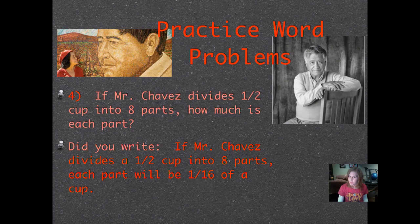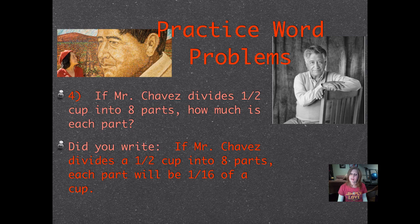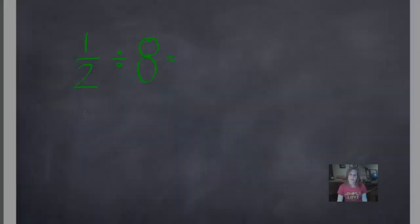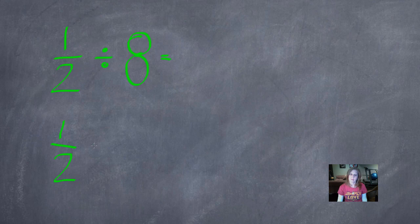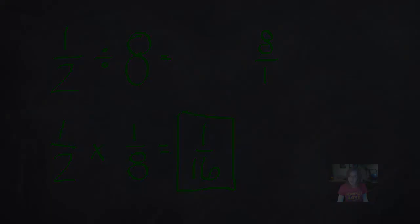Did you write something like: if Mr. Chavez divides 1 half cup into 8 parts, each part will be 1 sixteenth of a cup? Let's see how we did that. So we rewrite 1 half, change our division symbol into a multiplication symbol, and 8 over 1 written as a reciprocal is 1 eighth. 1 times 1 is 1, and 2 times 8 is 16. 1 sixteenth, again.